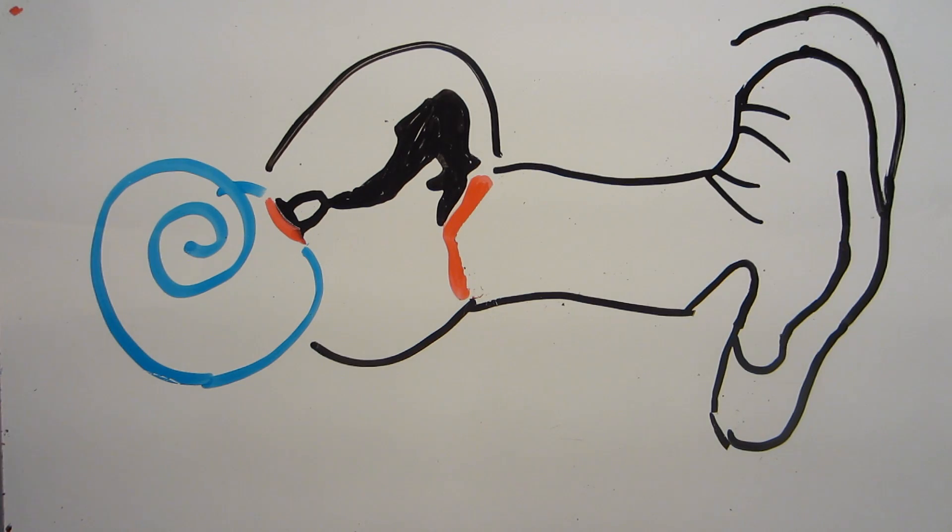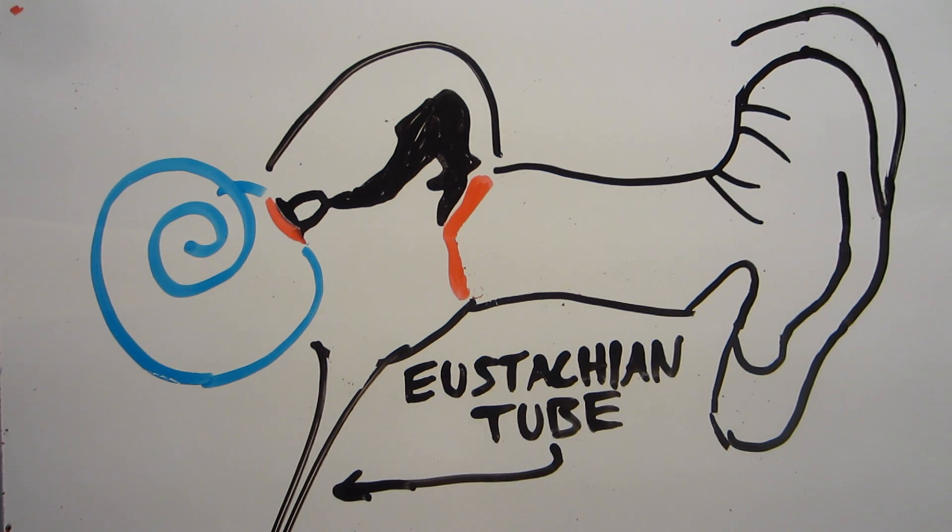Well, nature's solution to this whole pressure problem is a tiny little pressure relief tube that goes from your middle ear to your throat. It's called the eustachian tube. It's usually shut tight to keep the air in your middle ear still so you can hear properly, but it opens naturally in certain situations, like yawning or swallowing.